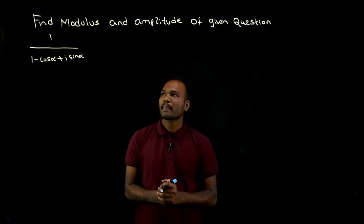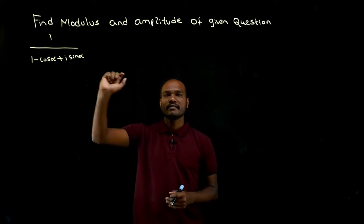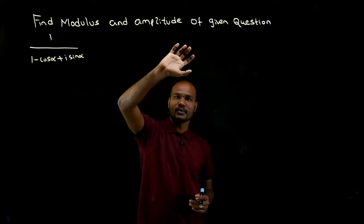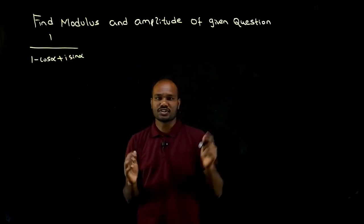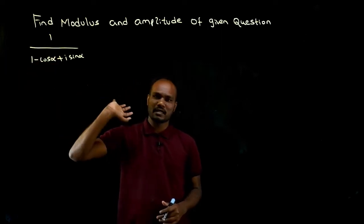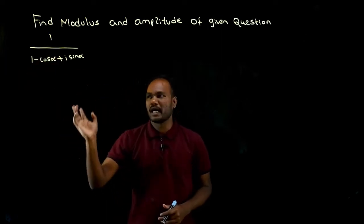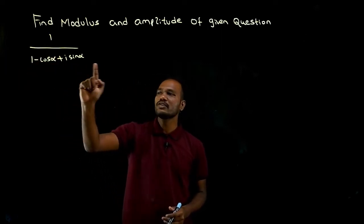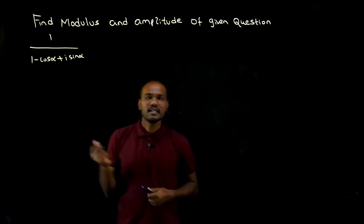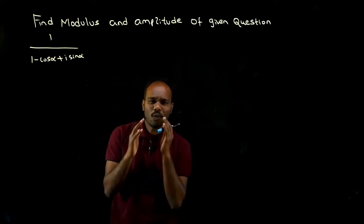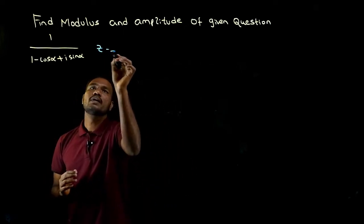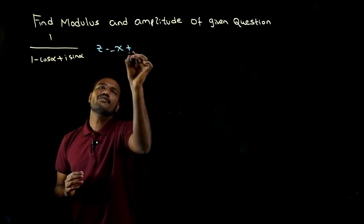What is given in the question? We have to find the modulus and amplitude for the given expression: one by one minus cos alpha, where that is the real part, plus i into sin alpha. Whenever a question is given, we always have to get it in the standard form.